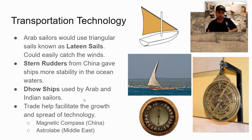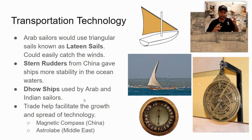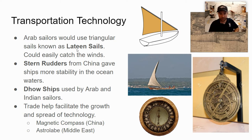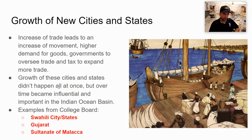New technologies coming about during this time include the magnetic compass and the astrolabe — technologies that make it easier to navigate and get to the places you need to go, making trade easier, safer, and more likely. That's another reason why you see the expansion of trade.